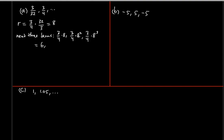Then 2 times 8 = 16, and 16 times 3 = 48 for the fourth term. And 48 times 8 — that's 50 times 8 minus 2 times 8, which is 400 minus 16 = 384 for the fifth term. So these are the next three terms: third term, fourth term, and fifth term respectively.